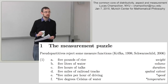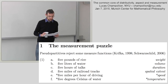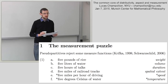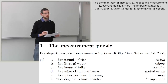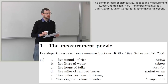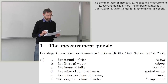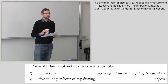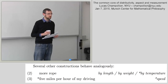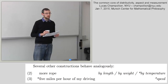Among admissible measure functions we find weight, volume, duration (as in 'five hours of talks'), and spatial extent (as in 'five miles of railroad tracks'). Among non-admissible ones we find temperature and speed. You cannot characterize a driving event by speed using a pseudo-partitive, such as 'five miles per hour of my driving.' This is also a more general constraint occurring in constructions like comparative determinants.